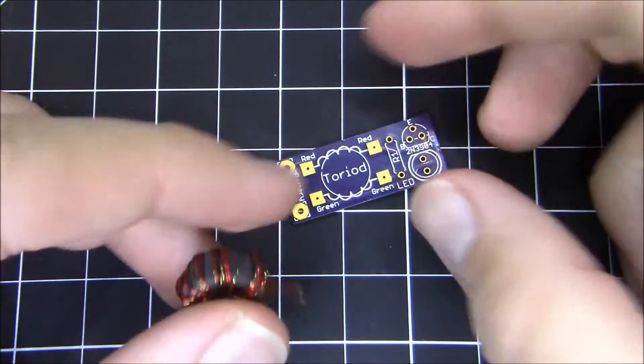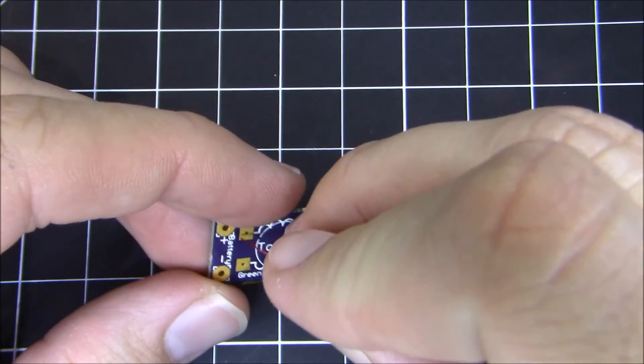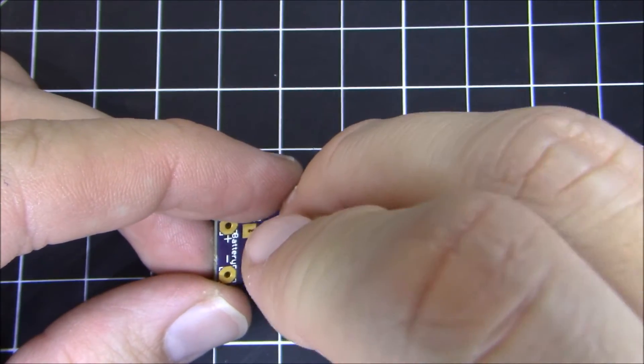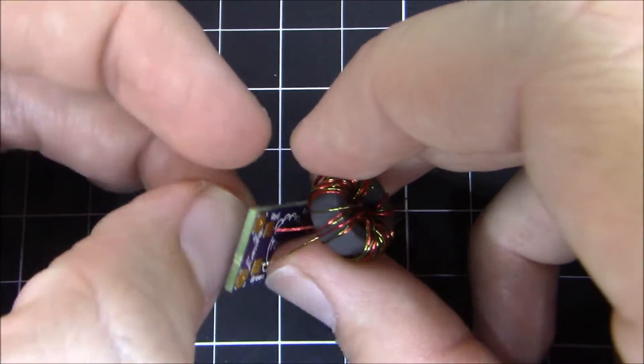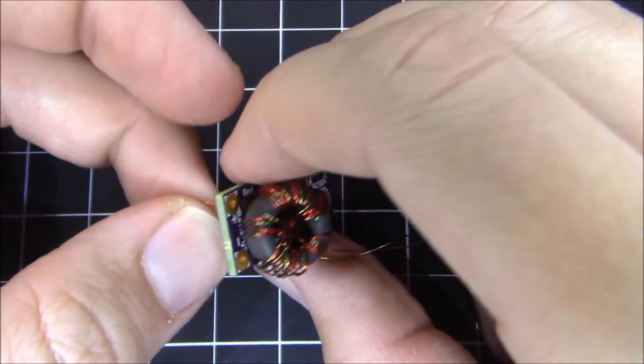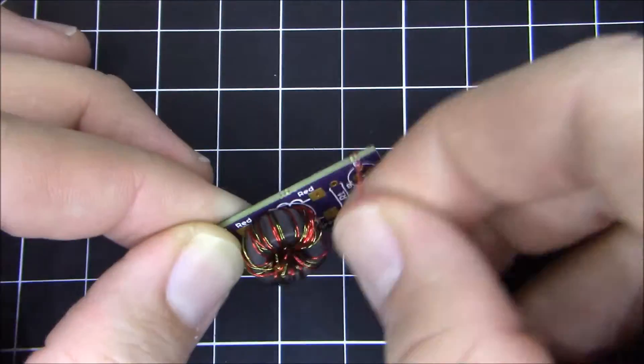So let's stuff the toroid onto the PCB. If you look at the PCB there's a pad that's labeled red, a pad that's labeled green. What you want to do is take one side of those wires and you want to put them in red and green. And then pull all the wires all the way through so they're out of the way. Do the same thing for the other side.